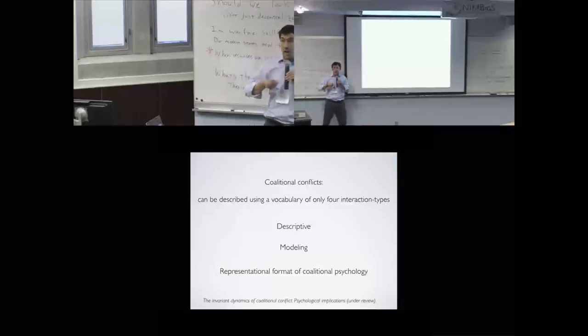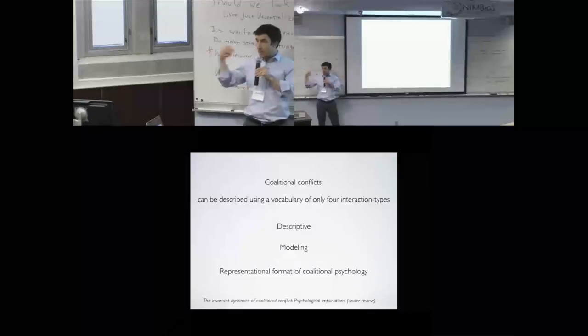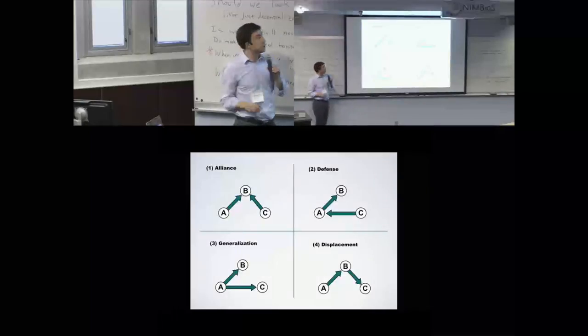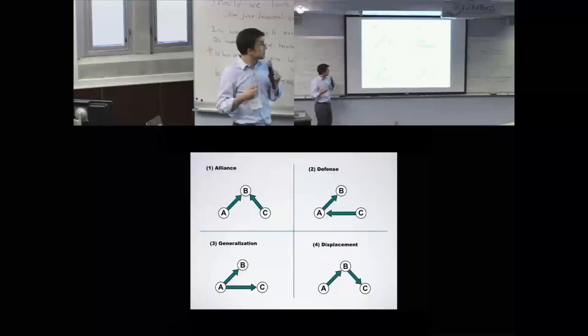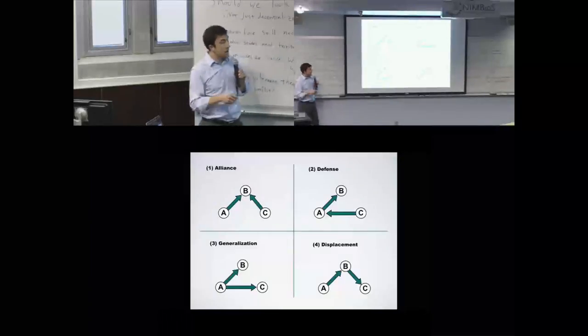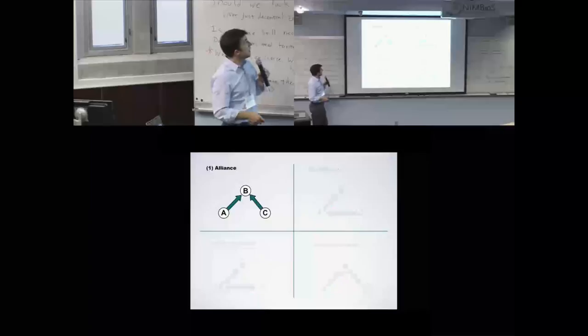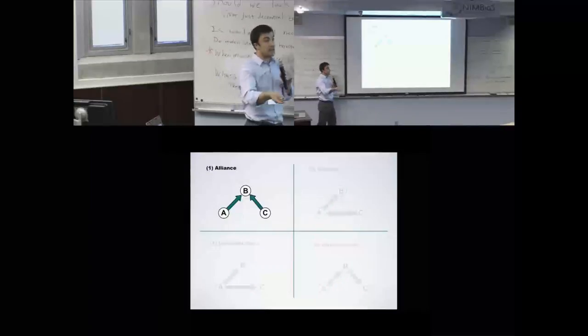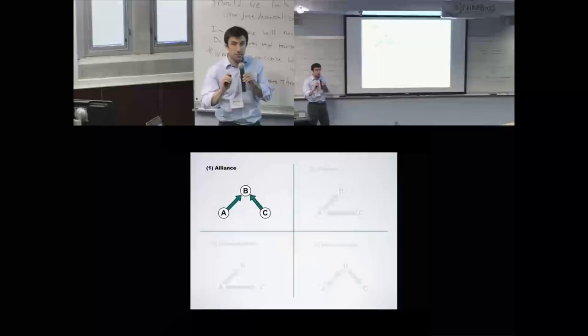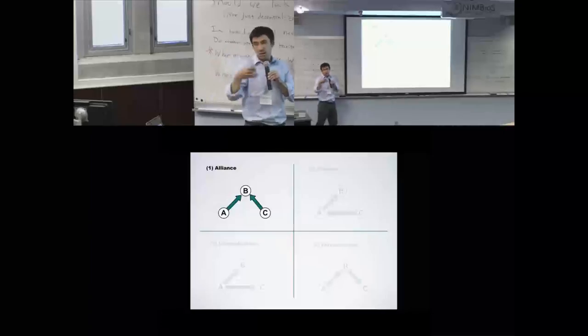Let me be specific. What are the four interactions? Alliance, defense, generalization, displacement. These are dynamics that people had come up with in the 80s for describing conflicts.